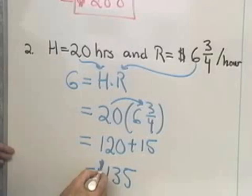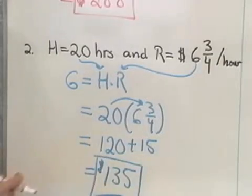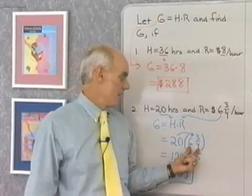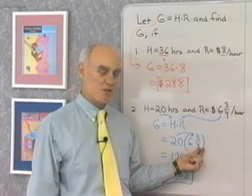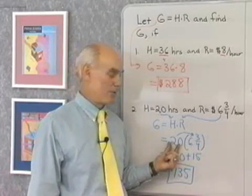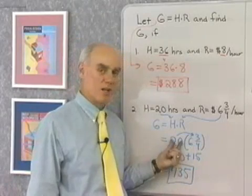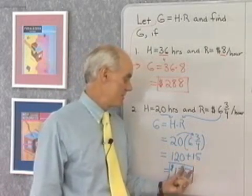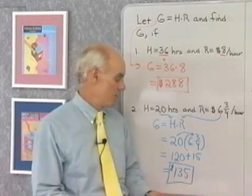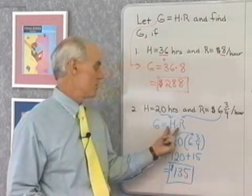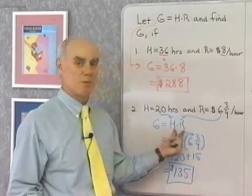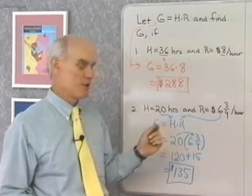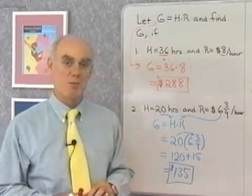Now there's other ways to do that arithmetic right there. I just did kind of a shortcut thinking that 6 and 3 quarters is 6 plus 3 quarters, and I use the distributive property. 20 times 6 is 120, 20 times 3 quarters is 15. And so 120 plus 15 is 135. So again, we simply use this formula right here, G equal to H times R, to find G when we were given H and R. Let's look at that formula that compares the two temperature systems.